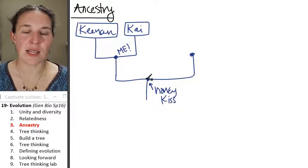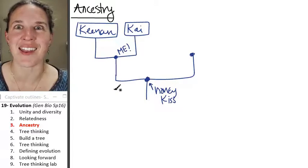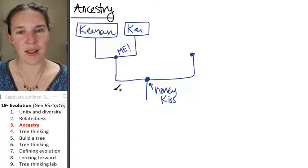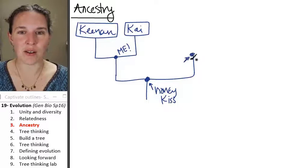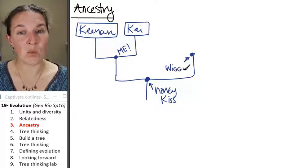Honeykiss gets to be her own node because she's an ancestor. And guess what? Am I the only person that she gave rise to? No, no, no, no. This is my brother, and we call him Wiggy. Wiggy has to be on the tree as well.